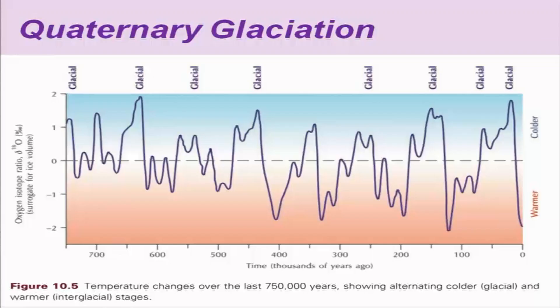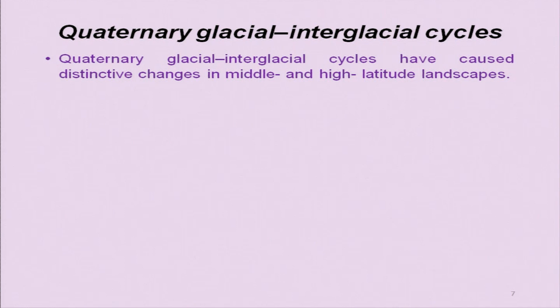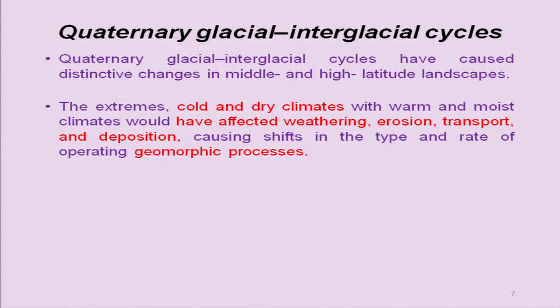Moving ahead from the previous lecture: the Quaternary period shows much fluctuation in terms of glacial cycles. Quaternary glacial and inter-glacial cycles have caused distinctive changes in middle and high latitude landscapes. Studying these landscapes helps us understand climate change. The extremes — cold and dry climates versus warm and moist climates — would have affected weathering, erosion, transport and deposition, causing shifts in the type and rate of operating geomorphic processes.